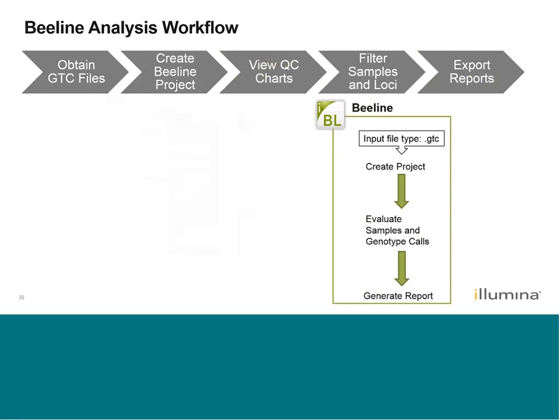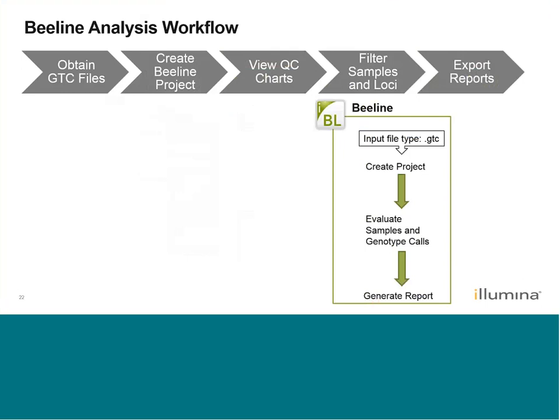Now that we have the software installed, we can start using it. The workflow is laid out in five steps: if we don't have GTC files already, we need to obtain those GTC files. Then we can create our project. Within the project, we can view the charts and filter based on QC metrics and criteria. Once we've filtered down our project, we're ready to export our report.